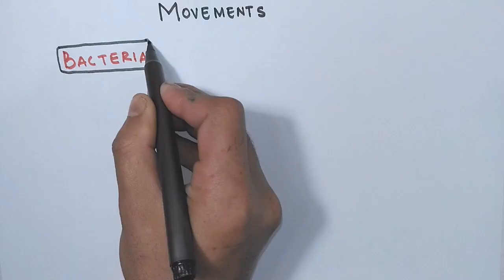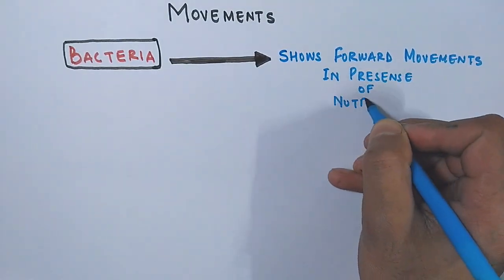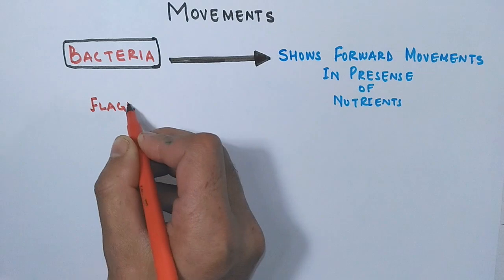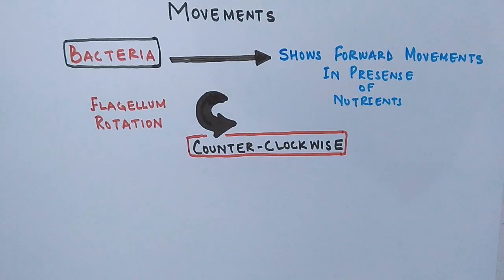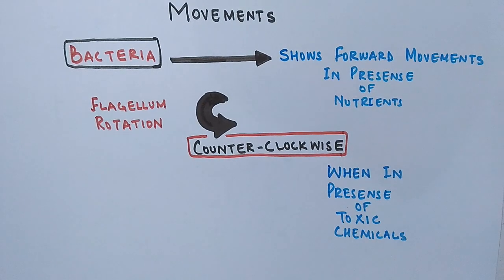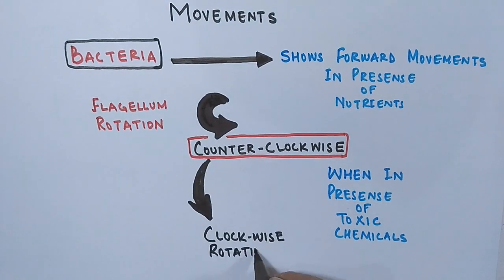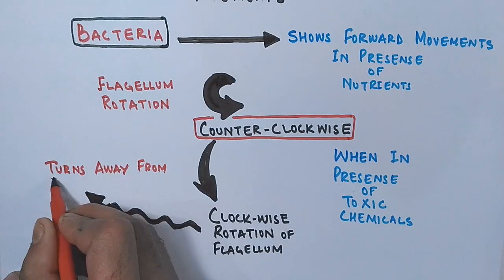Now let's see the movements in bacteria depending upon the substances which bacteria encounters. First of all, bacteria shows forward movements in presence of nutrients, and at that time the flagellum rotation is counterclockwise. But when there is presence of any toxic chemicals in its vicinity, the counterclockwise movement will be switched to clockwise rotation of the flagellum and the bacteria will turn away from that substance.